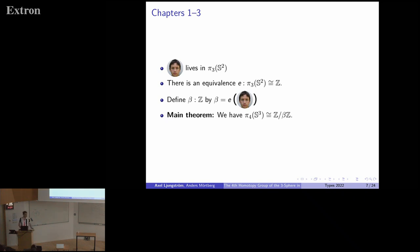This map, which I'm calling the Brunerie map, denoted by a young Brunerie, lives in Pi 3 of S2. As some of you may know, there's an equivalence E from Pi 3 S2 to the integers. We can look at what happens when we take the Brunerie map and map it into the integers via this equivalence. Let's call the result beta. This is now the famous Brunerie number.